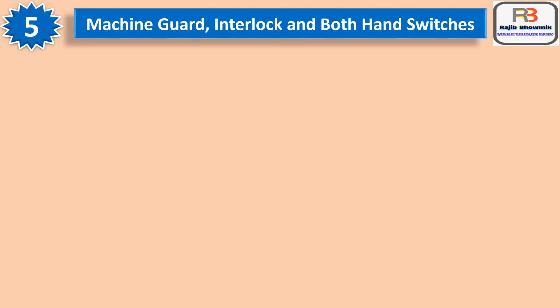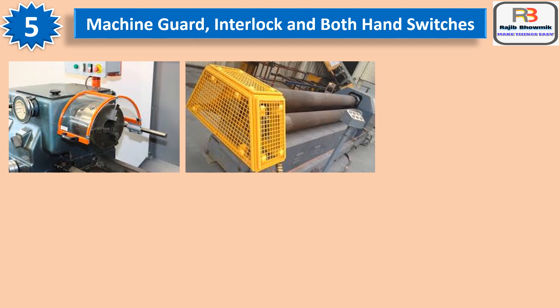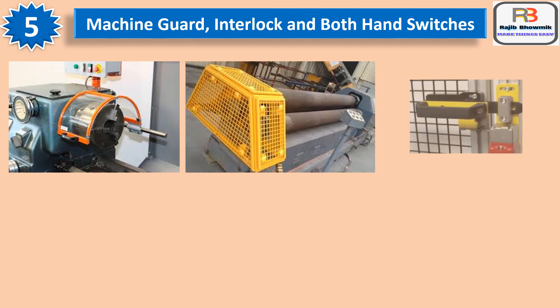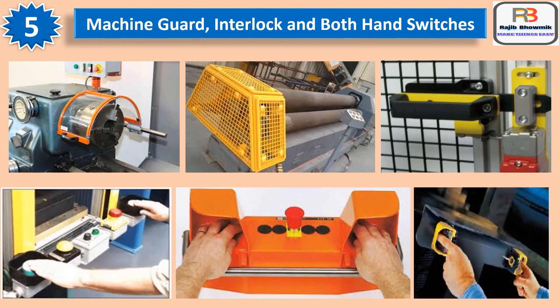Number five is machine guarding, interlock, and both-hand switches. All moving parts of a machine are to be guarded. An interlocking system should be in place for some machines — if the door is not locked, the machine will not run. If both hands are used, only then will the machine operate. These types of switches are used for specially pressed machines. All these things reduce the possibility of accidents.